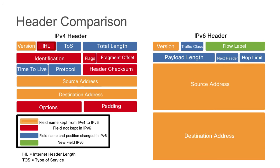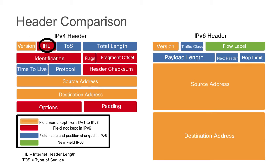Let's compare the headers. On the left-hand side you see an IPv4 header — we've already discussed these fields. Looking at the differences: right off the bat, you'll notice that in IPv4 we have a version field, and we have a version field in IPv6 as well. IPv4 has an IP header length field, and we don't need that field anymore in IPv6, so it was simply removed, which reduces the overhead involved in this header.